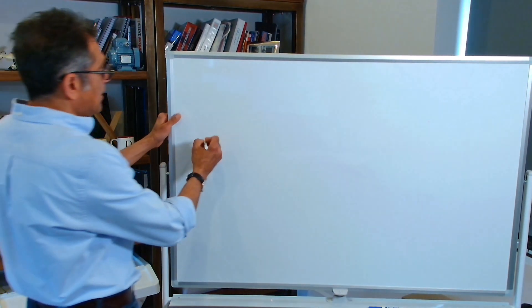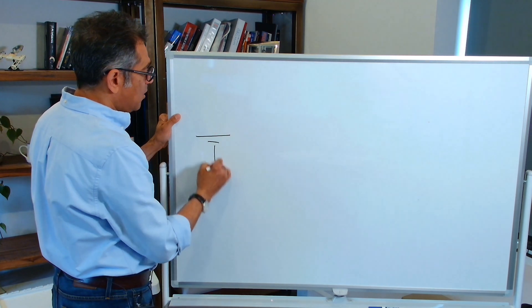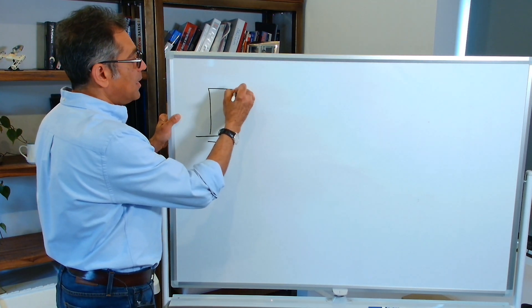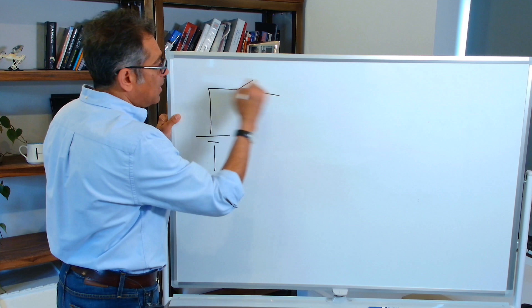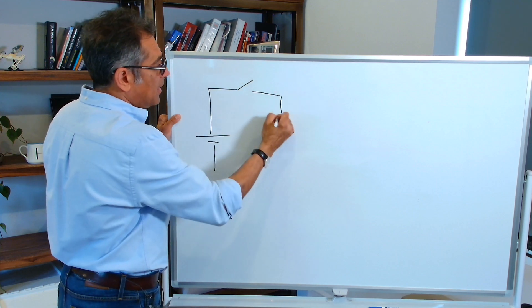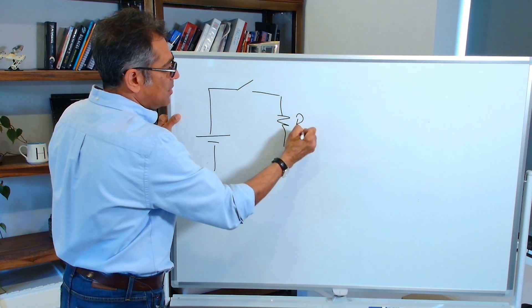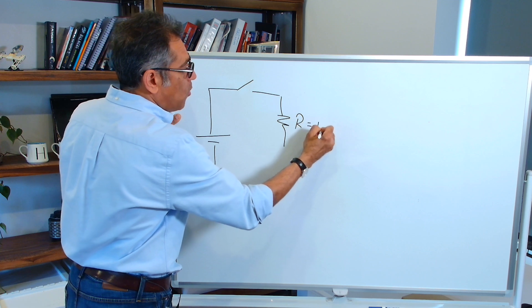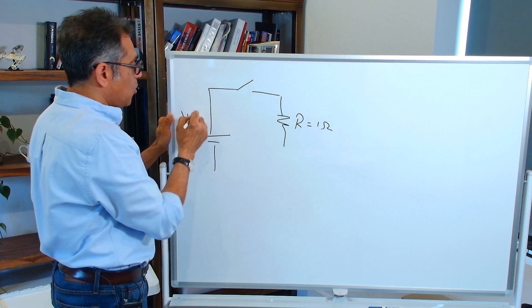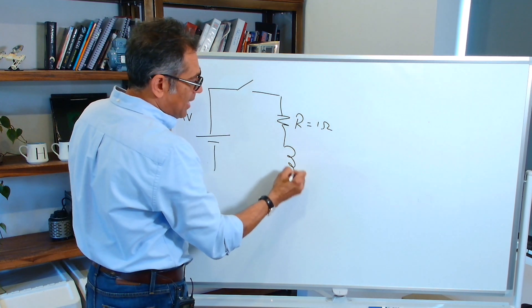So if I start with let's say a simple one volt DC battery, let's say I have a switch here, let's say I have a resistance of one ohm. Let's say this is only one volt and then let's say I have an inductor.